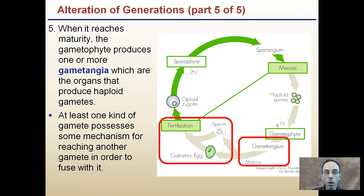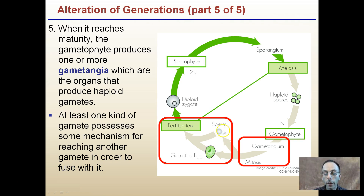The last step: when it reaches maturity, the gametophyte produces one or more gametangia — the organs that produce haploid gametes. At least one kind of gamete has some mechanism for reaching the other gamete in order to fuse with it, as in the example of sperm and egg. When these come together, that's fertilization, taking n and n to form 2n — a diploid zygote — and the process repeats itself.